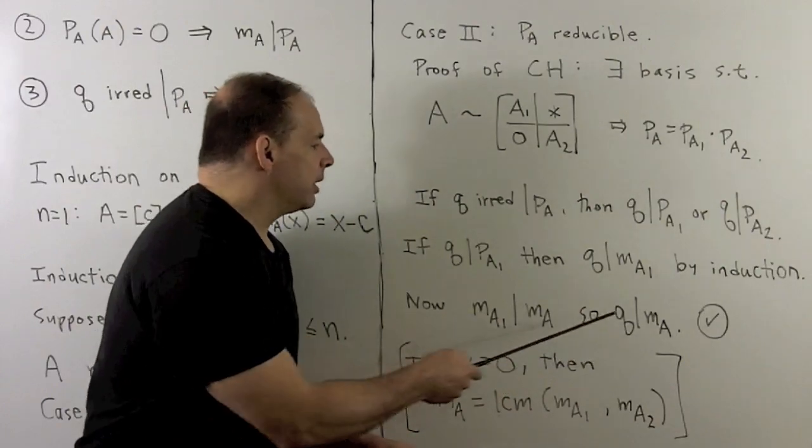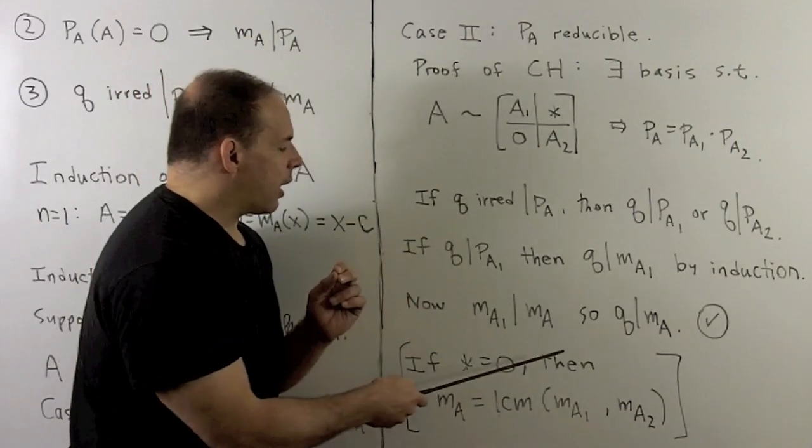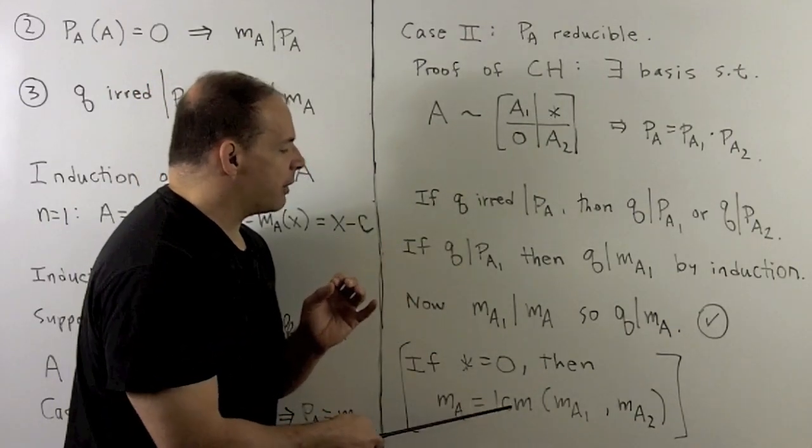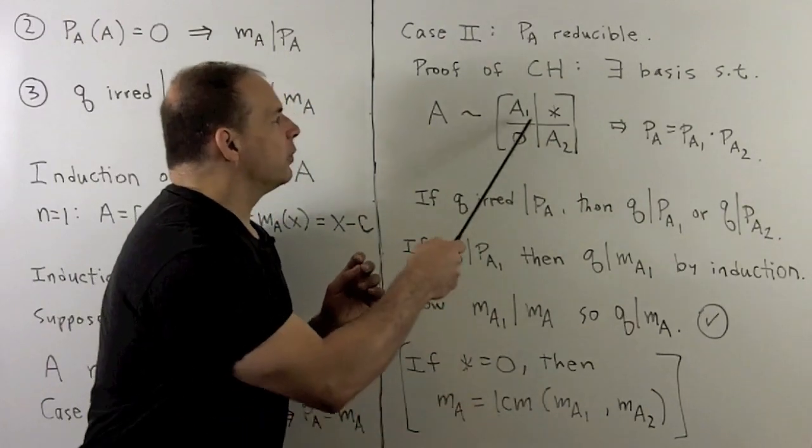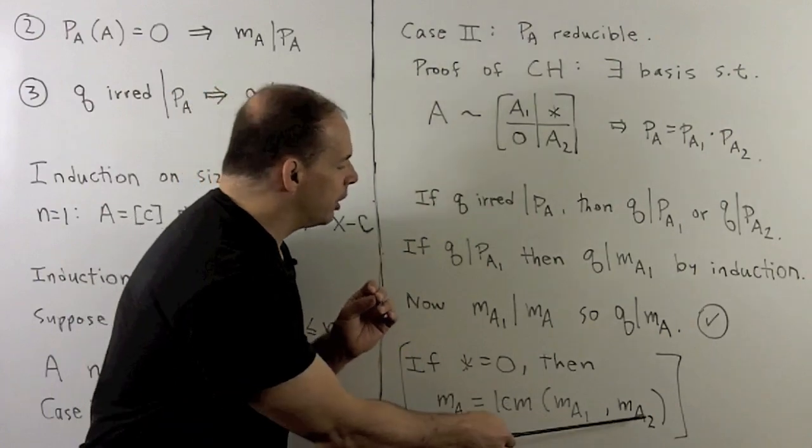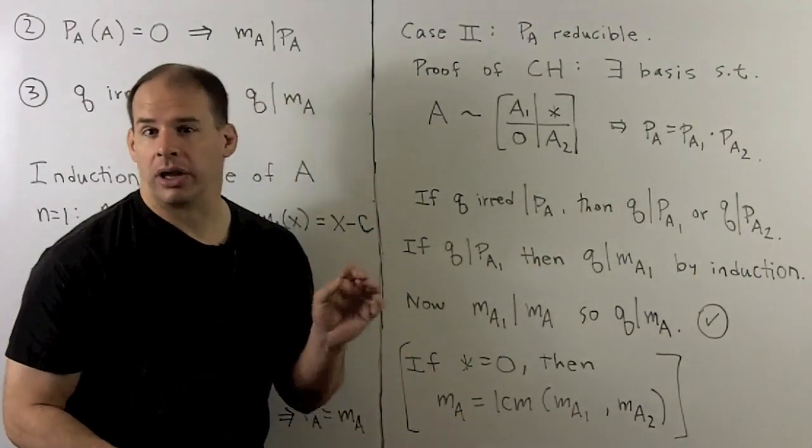So we'll have that M_A1 divides M_A, and then that means that Q must divide M_A. Now, for this step here, just note, if the star here was equal to zero, I would have that M_A is equal to the least common multiple of M_A1 and M_A2. But if we have something here, we're just going to have this least common multiple divides the minimal polynomial of A. So that's how we'll get our result.